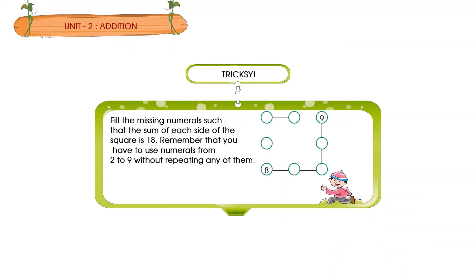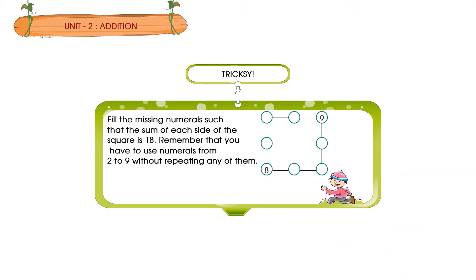Trixie: Fill the missing numerals such that the sum of each side of the square is 18. Remember that you have to use numerals from 2 to 9 without repeating any of them.